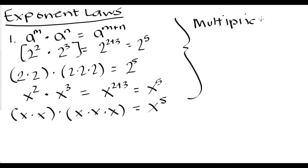What's very important to remember with the multiplication rule is that this rule only applies when we have a common base. In our first example the common base was a, in the second it was 2, and in the third it was x. This rule would not hold if we had a raised to an exponent multiplied by b raised to a different exponent, or 2 to the second power multiplied by 5 to the third power.